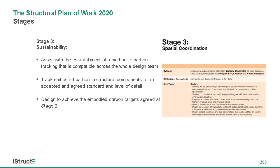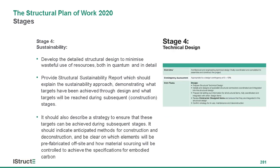Stage three is the spatial coordination stage, more about coordinating all the different design disciplines to ensure everything is spatially coordinated. In terms of sustainability, it's further development of what was agreed at stage two, designed to achieve the targets set. Stage four is the technical design. The points added here include minimizing wasteful use of resources. It becomes a complete document available to everybody, showing what has been done through the design stages and covering how the targets can be achieved during construction, handover, and the in-use stage.